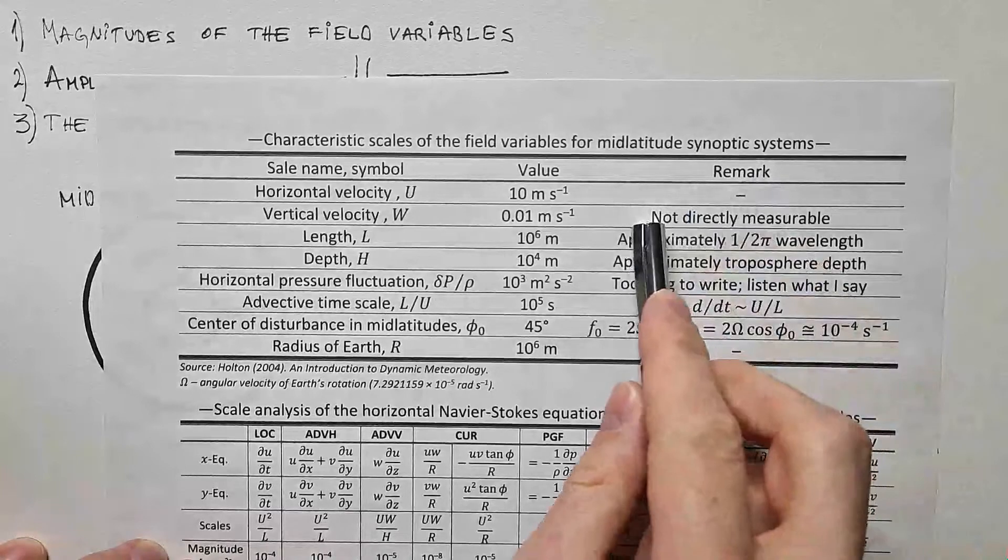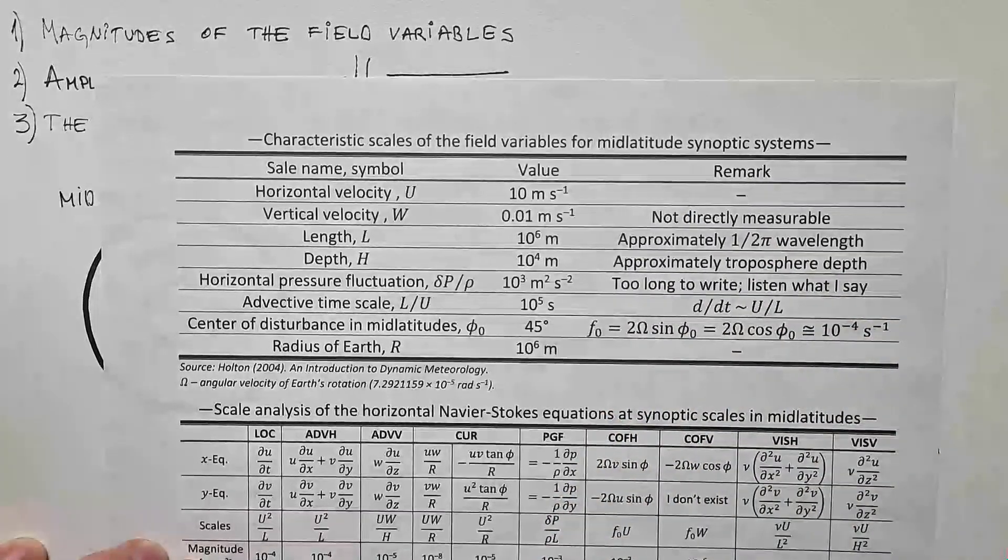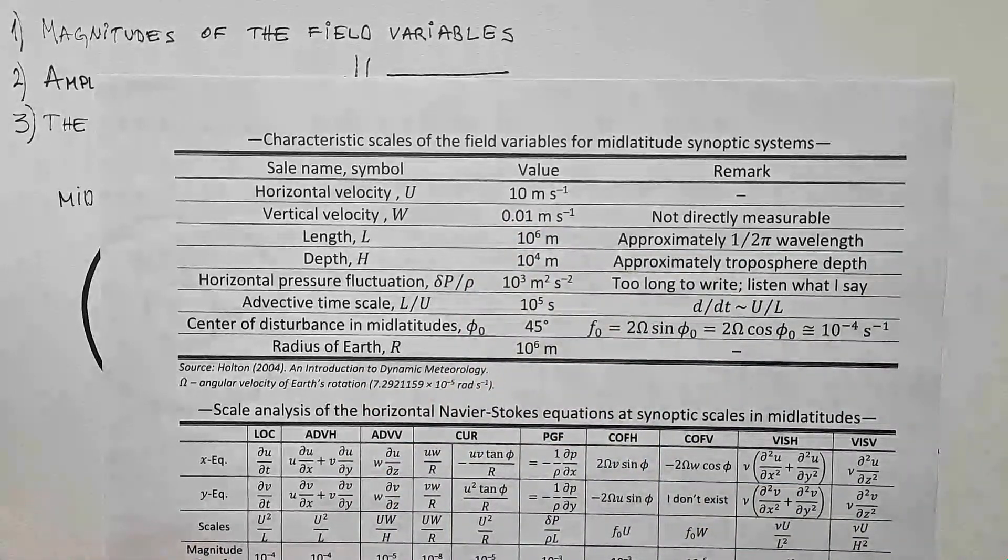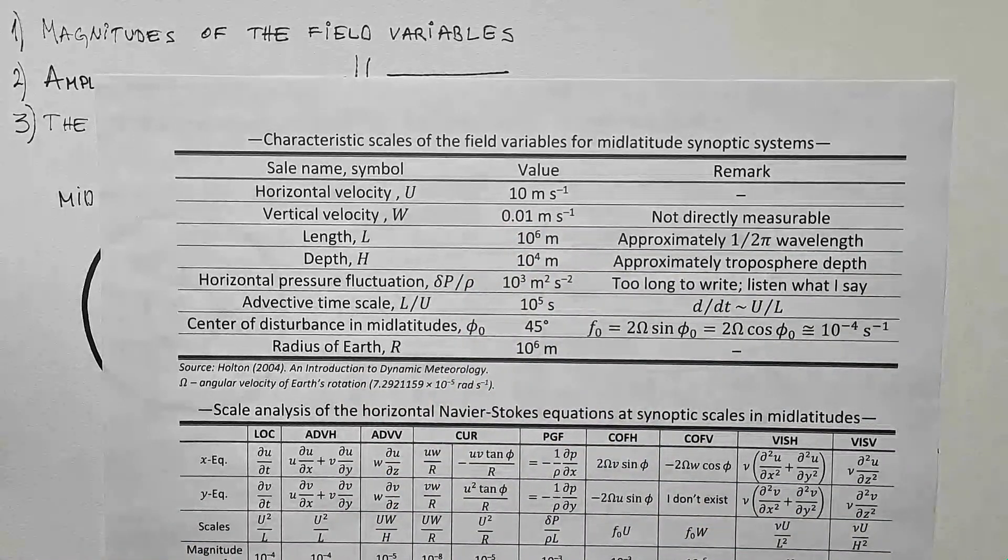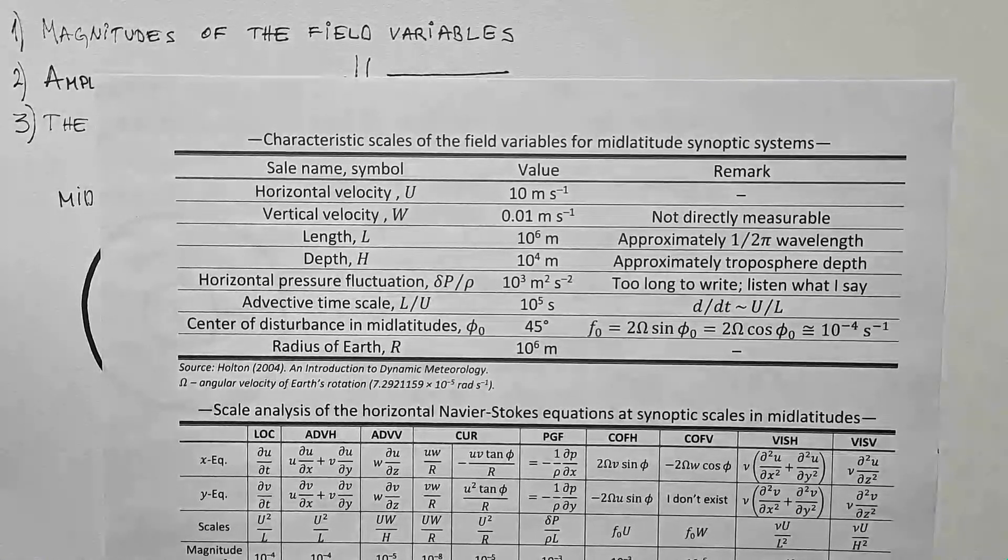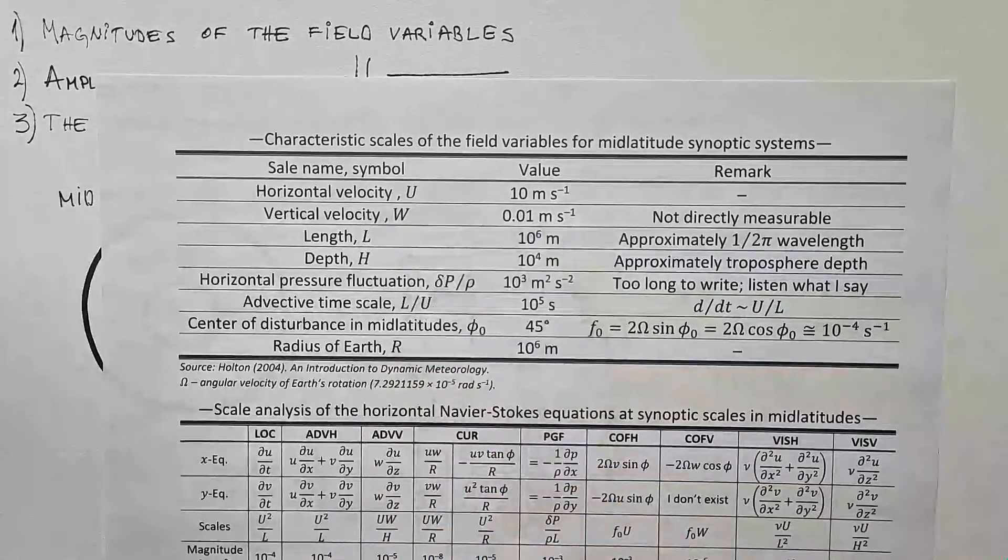Vertical velocity is order of magnitude 1 cm per second. But remark, this is not directly measurable at synoptic scales. So we can only diagnose it or infer it. And I will cover in future how we do that. We can use continuity equation. We can use thermodynamic equation, omega equation, and so on. So this cannot be measured, only inferred.